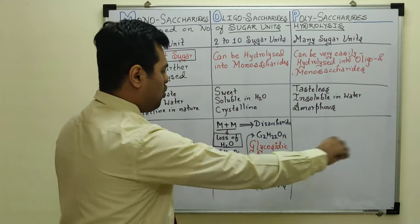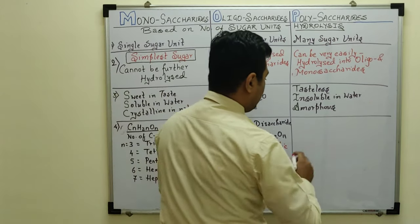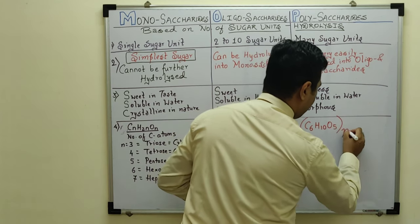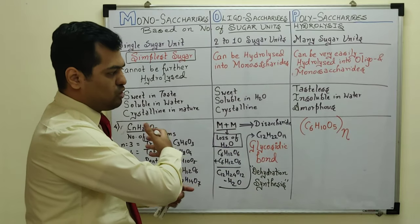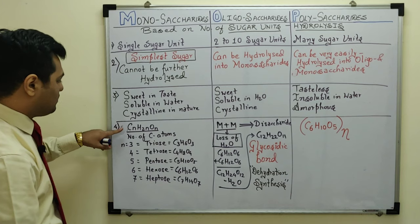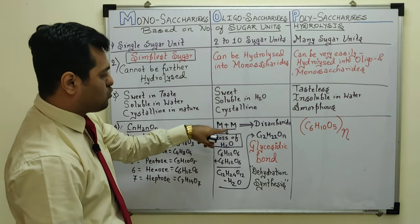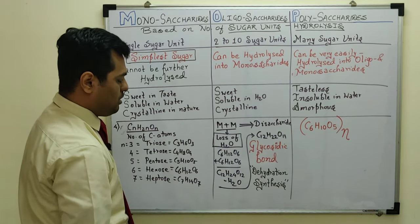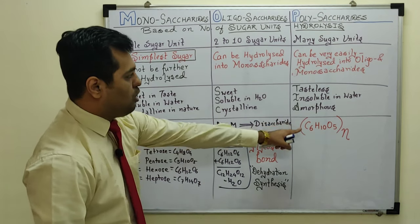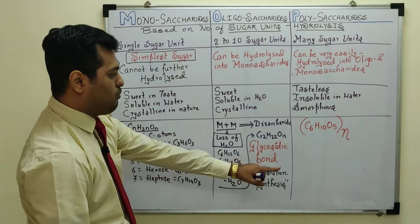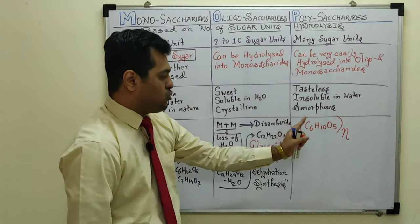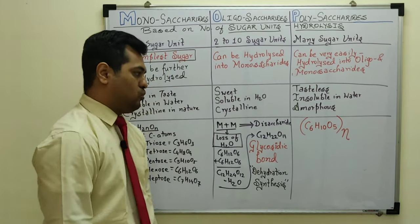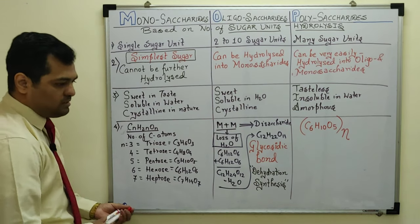For polysaccharides, the general formula used is (C6H10O5)n, where n can be very large — even 100,000 or more. These are long-chain polymers. When monosaccharides join to form polysaccharides, glycosidic bonds form and water molecules are lost between each monomer unit.